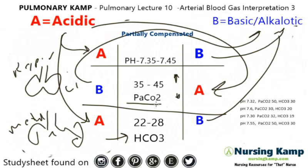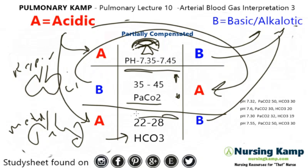Respirations will go up and down to regulate the ABG. We talked about in the previous lecture with uncompensated, where the body is meant to regulate and try to go back and forth. Uncompensated is when there is something in the middle and the pH is outside — when there's something in the middle, it's usually uncompensated.